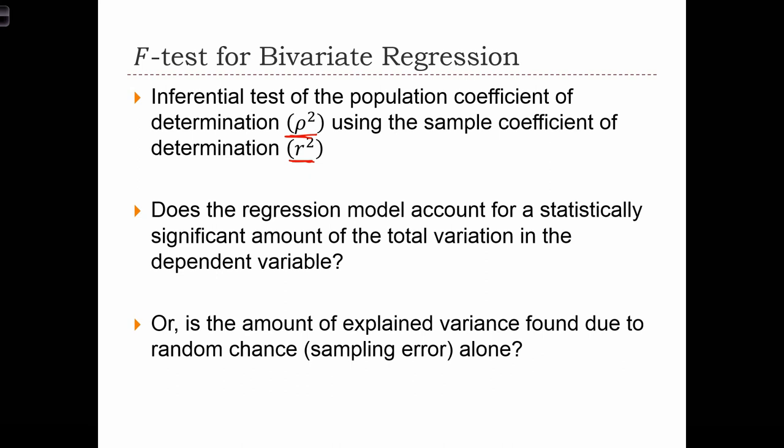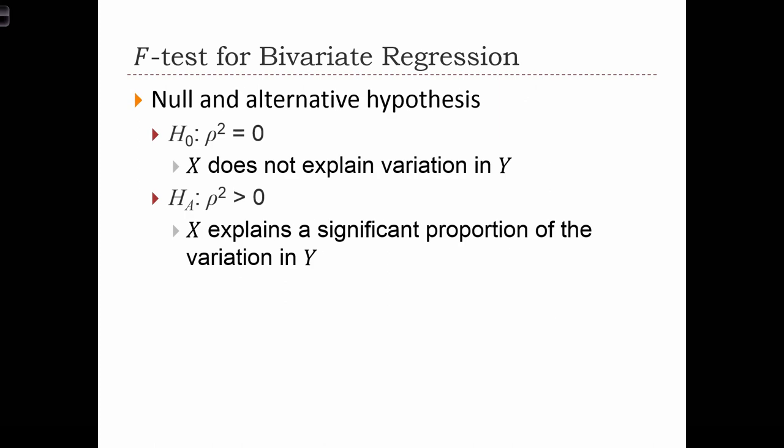Does our sample statistic provide us with enough evidence to conclude that in the population, there truly is a good relationship between x and y? We can set up an F test using the traditional steps in hypothesis testing. The null hypothesis is always that rho squared equals 0, that there is no relationship between x and y in the population.